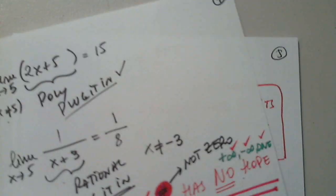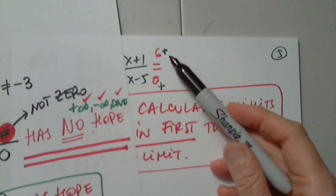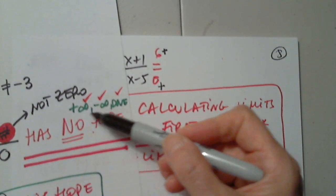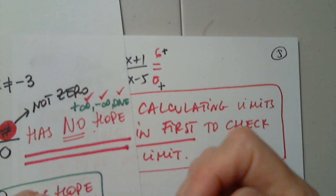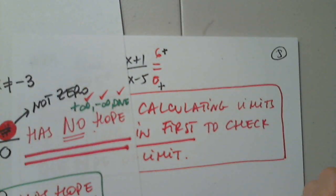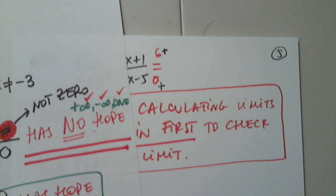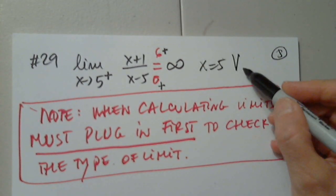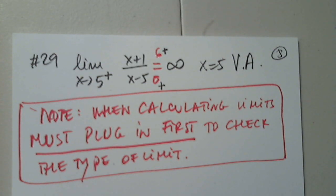So would you pick positive infinity, negative infinity, or DNE? The DNE is only when the left is 5 and the right is negative 10, or the left is negative infinity and the right is positive infinity. It's positive, so positive infinity. Absolutely — that's the correct answer. So then of course, x equals 5 is a vertical asymptote.